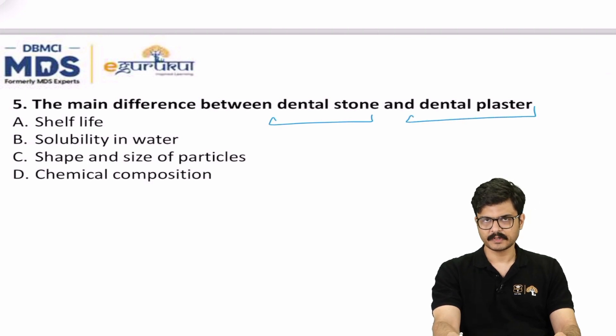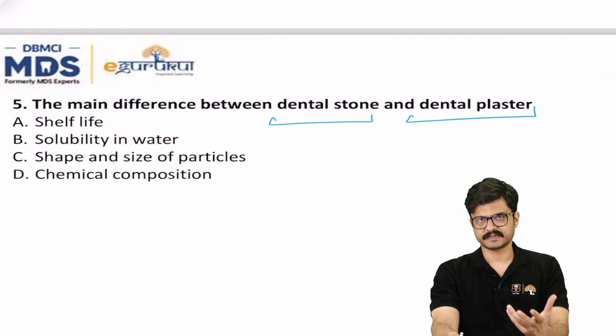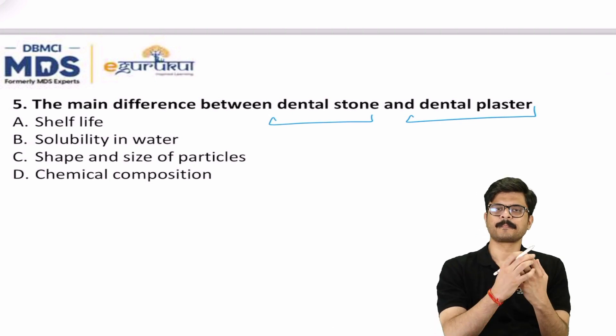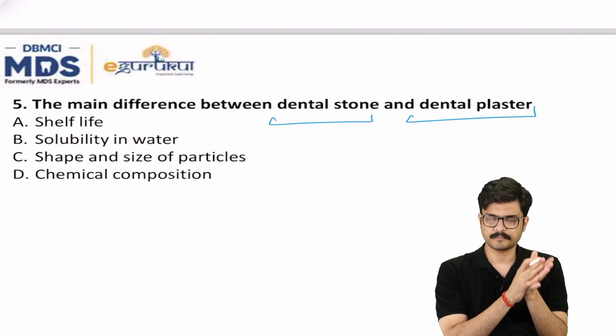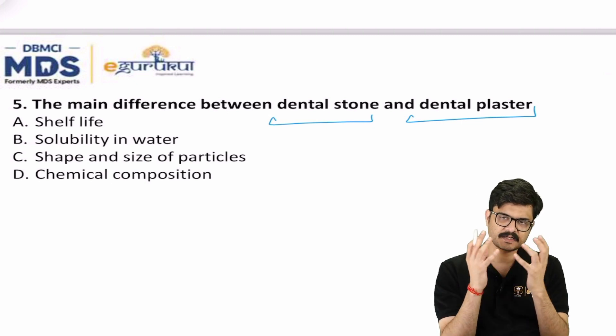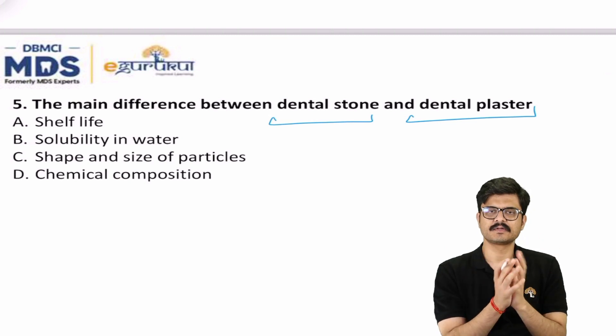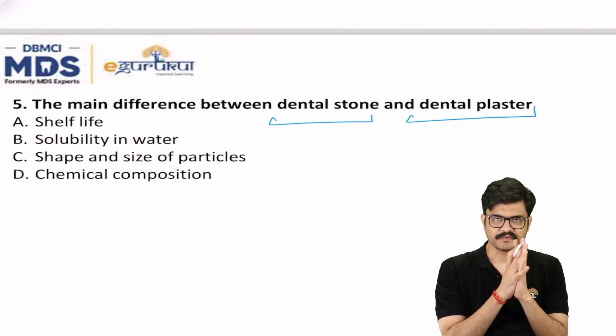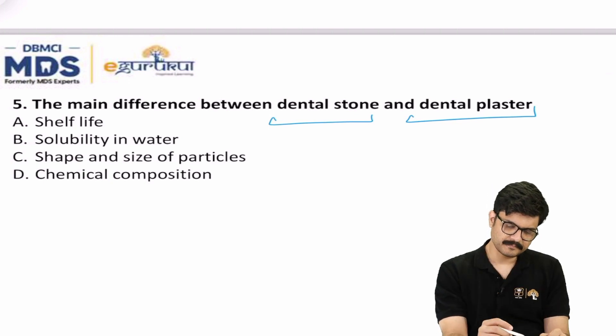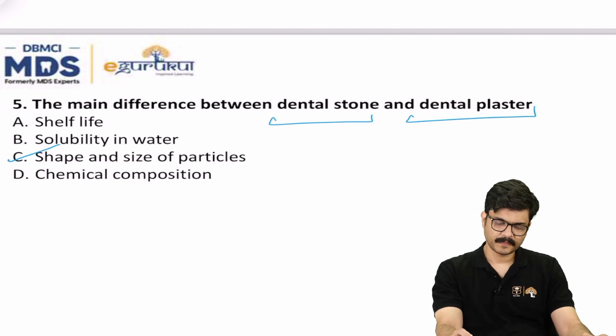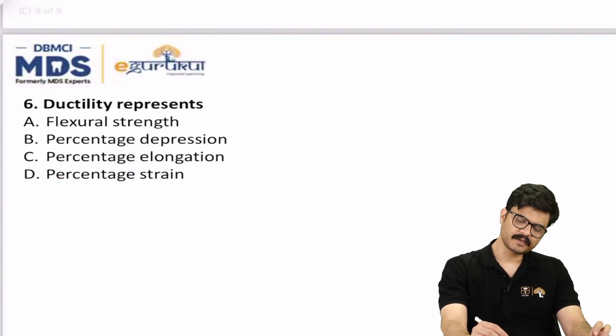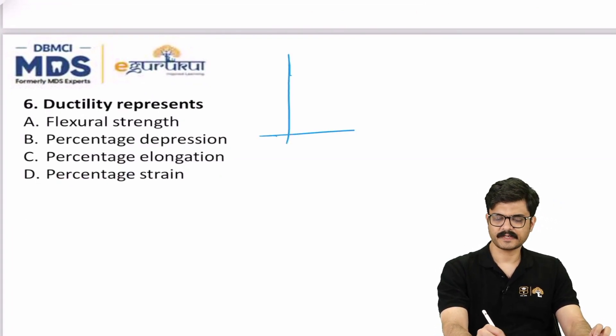The main difference between dental stone and dental plaster. This is also a direct pick from your Phillips. The first page only tells you about the fact that the size, as you go from plaster to stone, the size becomes finer, more equiaxed. So the structure is less porous, it's more dense. So it's basically the shape and size of the particles. No doubt about this, no ambiguity. Answer is C: shape and size of the particles.